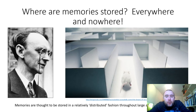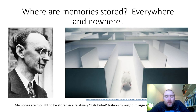He took rats and trained them to negotiate a maze. Then he removed parts of the rats' brains gradually, removing more and more. The idea was that if the map of the maze was stored in a single, well-defined area, removing it would make the rat completely lose that skill. However, what Lashley discovered was that you had to remove huge amounts of brain for maze navigation to be significantly affected.